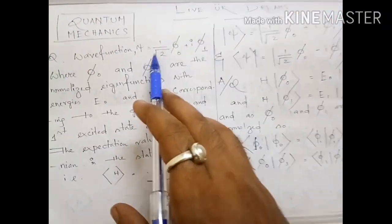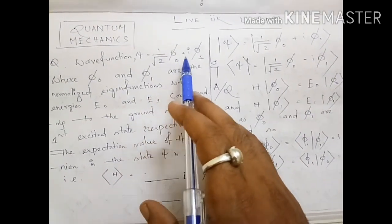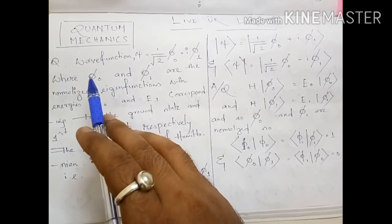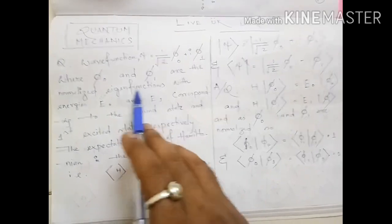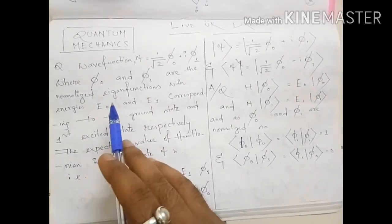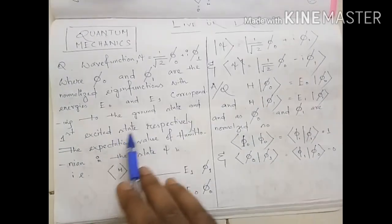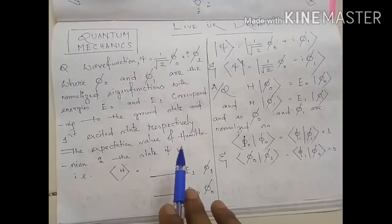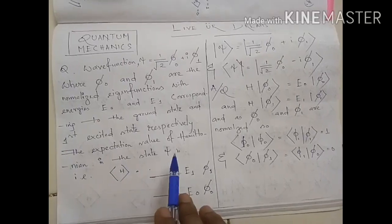Here we have a wave function ψ equal to 1 by root 2 times (φ₀ + iφ₁), where φ₀ and φ₁ are normalized eigenfunctions with energies E₀ and E₁ corresponding to the ground state and first excited state respectively. The question asks us to find the expectation value of the Hamiltonian in the state ψ.